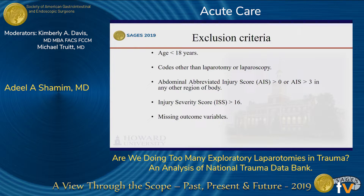In stable trauma patients, the following exclusion criteria were applied: any patient less than 18 was excluded; if a patient had codes other than a laparotomy or laparoscopy, they were excluded; any patient with an abdominal AIS score greater than zero, AIS score greater than three in any other body region, or ISS score greater than 16 were excluded. This was done to ensure injury did not account for the outcome. Any patient with a missing outcome variable was also excluded. Patients meeting inclusion criteria who underwent laparotomy were assigned to the NL group, and those who underwent laparoscopy were assigned to the DL group.